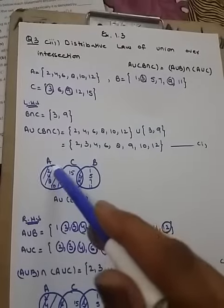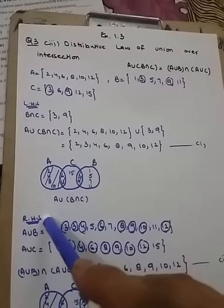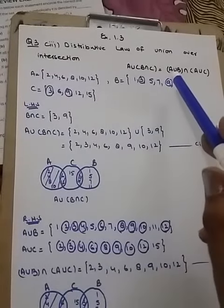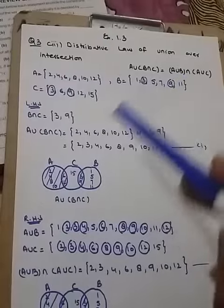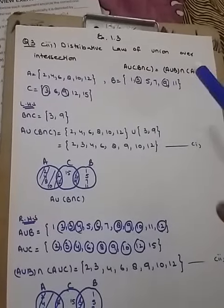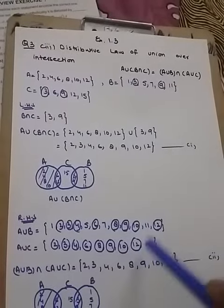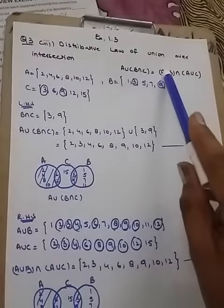Now the right hand side. On the right hand side I'm going to solve A union B first and this is the answer of A union B. And then A union C, this is the answer of A union C, and then the intersection of these two.